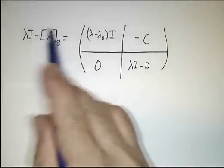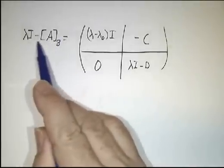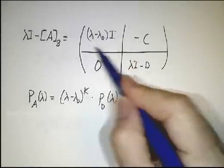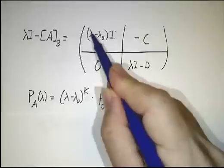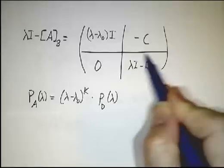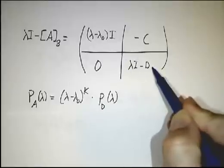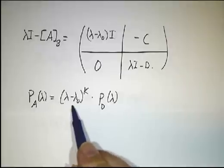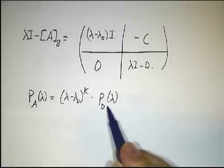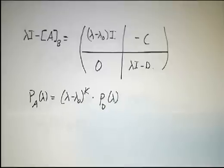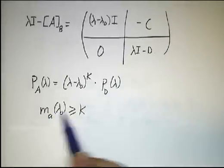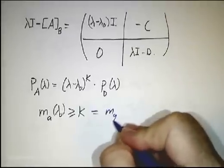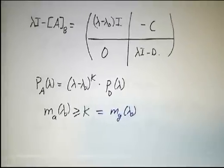The determinant can be computed in any basis, and all bases give the same characteristic polynomial. We can see that we already pick up k factors of (λ − λ₀) from the upper-left block, and then we pick up whatever the determinant of the lower-right block gives. So the characteristic polynomial has at least k factors of (λ − λ₀), which means the algebraic multiplicity has to be at least k — at least as big as the geometric multiplicity. That's what we wanted to prove.